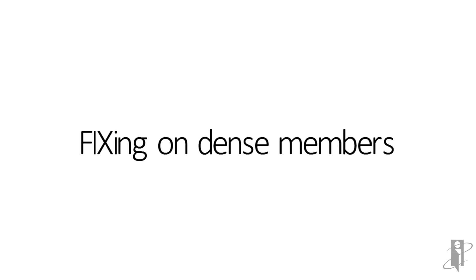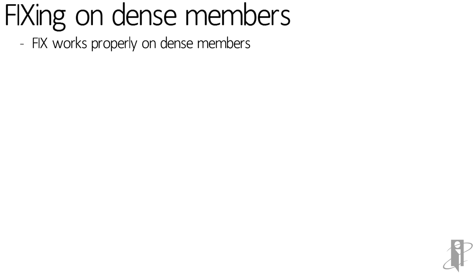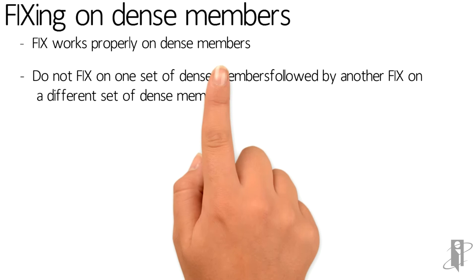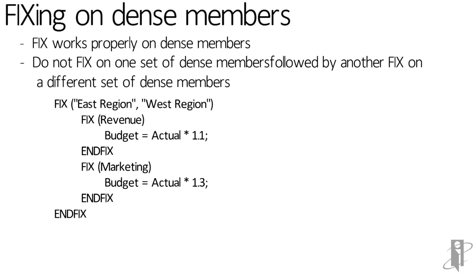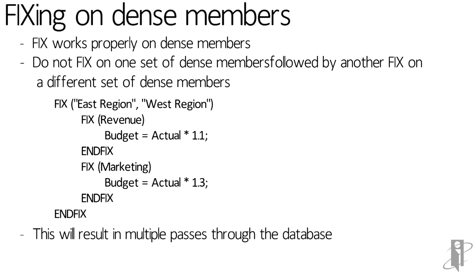While most examples fix on sparse members, you can fix on members from dense dimensions and it works quite well. Even though it pulls the whole block in including the entire set of dense members, it only operates within the FIX and END FIX on the dense members you specify. But be careful — if you fix on one dense member and then later fix on a different dense member, this results in two passes through the database. For example, if Revenue and Marketing both come from the Measures dimension (a dense dimension) and you want Revenue up 10% and Marketing up 30%, doing two separate FIX statements causes two passes. A better approach in that case would be to use the IF function.